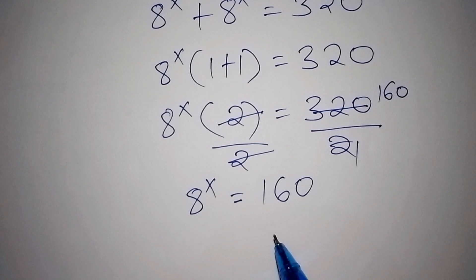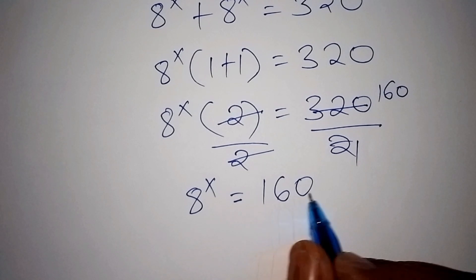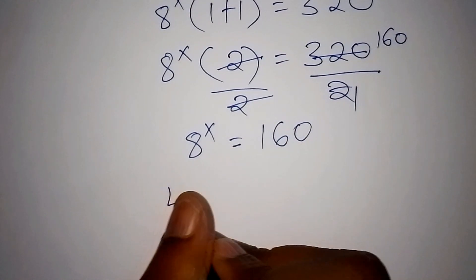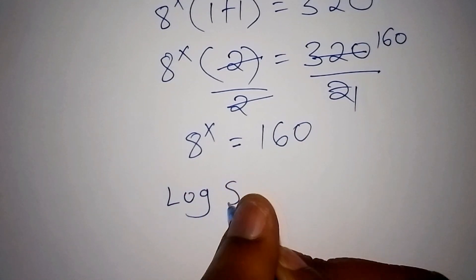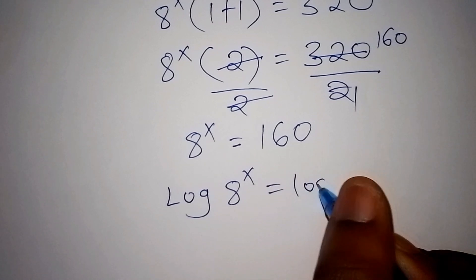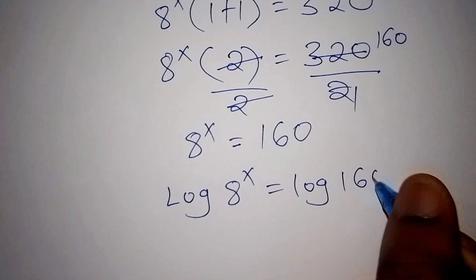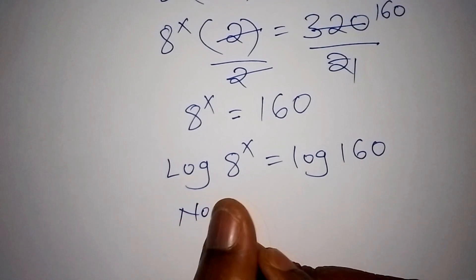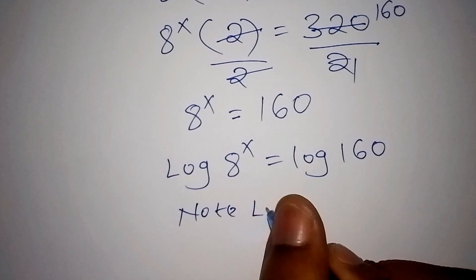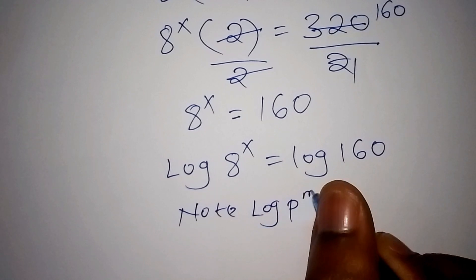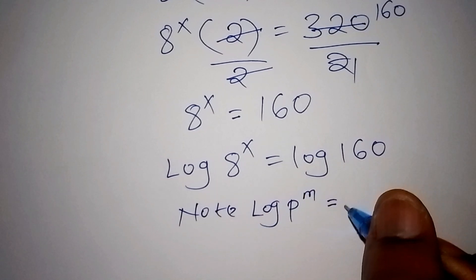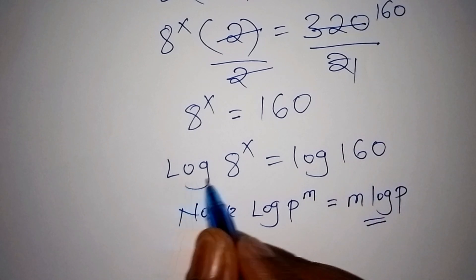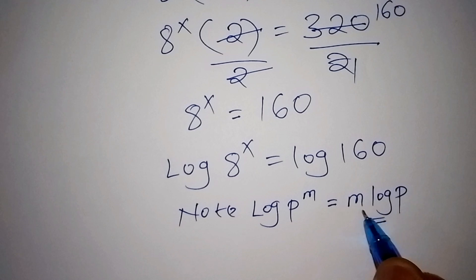In this case, it is difficult for us to express 160 to the base of 8, so we shall use logarithms. We introduce: log of 8 to the power of x equals log of 160. Note that log of p to the power of m can also be written as m·log(p).